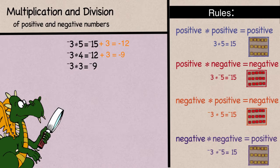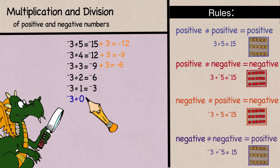If I was to add 3 to negative 9, I would get negative 6, and negative 3 times 2 is negative 6. Negative 3 times 1 is negative 3, and negative 3 times 0 is 0, since any number times 0 is 0.